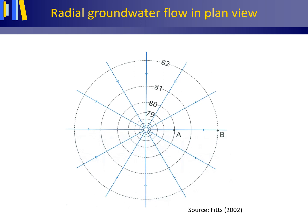Pumping wells — other words are withdrawal wells, discharge wells, or abstraction wells — are functional for the withdrawal of groundwater from aquifers for use as drinking water or for use in agriculture and industry.